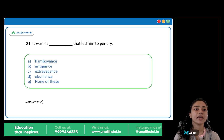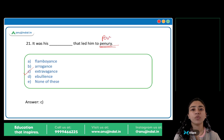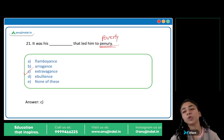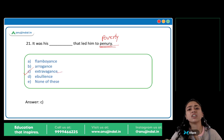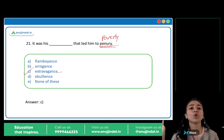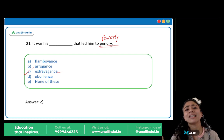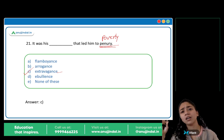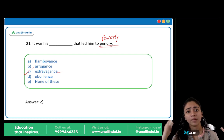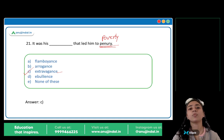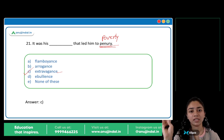The answer is C: Extravagance. It was this extravagance that led him to penury. Penury means extreme poverty. Extravagance means a very lavish, luxurious lifestyle — someone who spends a lot of money on things that are not necessities, like expensive cars and big houses. Because of his extravagant lifestyle he spent all his money and became poor — fell into penury.